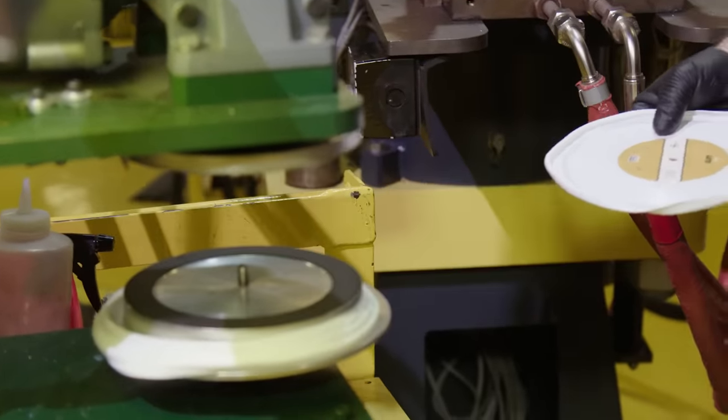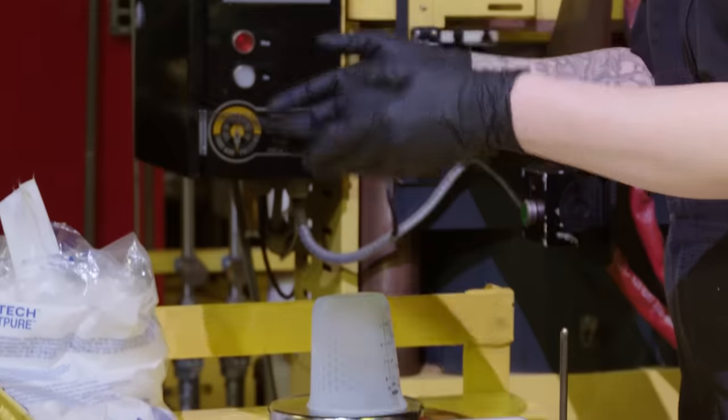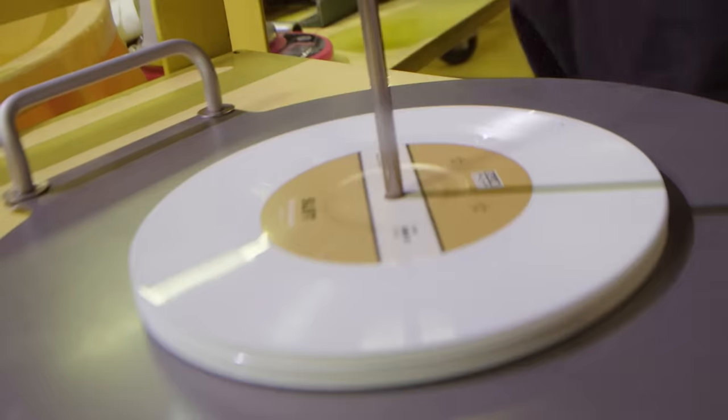Once the record comes out of the press, we do a quick visual inspection. We look at the flatness and label orientation initially. Once we finish the visual inspection, we send it to an audio quality control check.